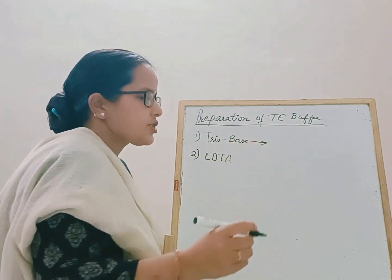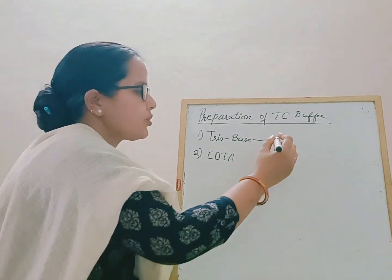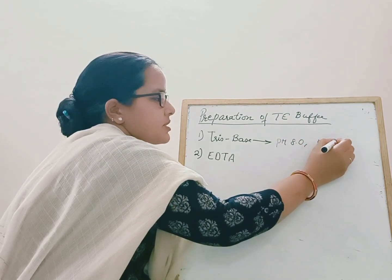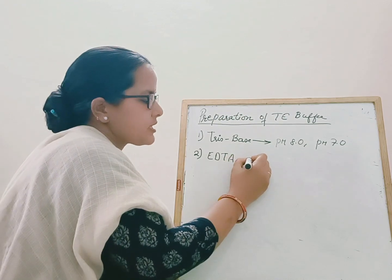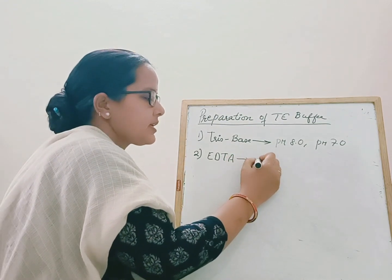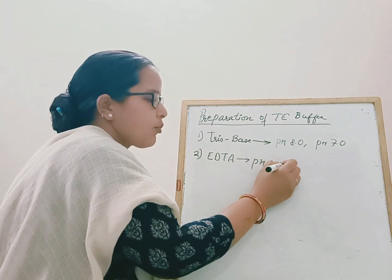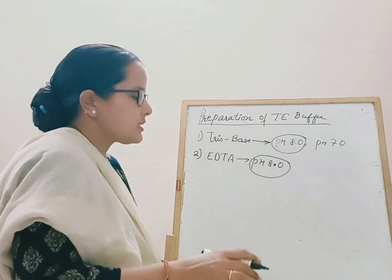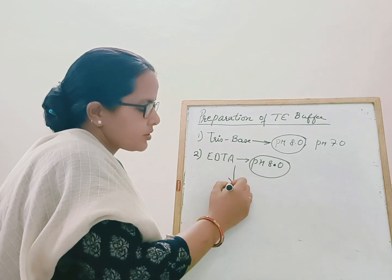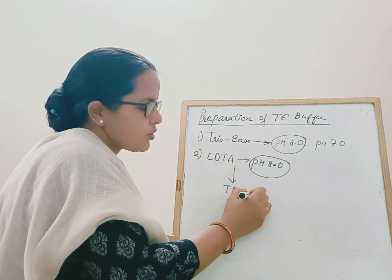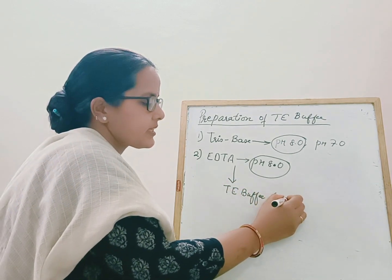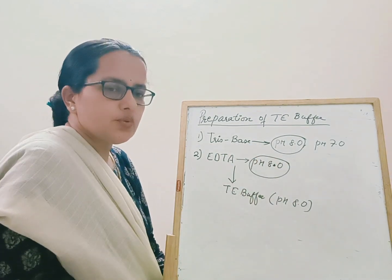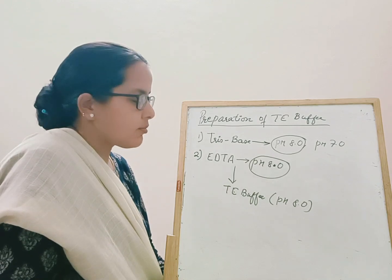For Tris base, you have to adjust its pH to either pH 8 or pH 7. For EDTA, you need to set the pH to 8. In a molecular laboratory, Tris base at pH 8 and EDTA at pH 8 are combined to reconstitute the TE buffer. This TE buffer of pH 8 is utilized in the molecular laboratory for DNA extraction, plasmid work, and many other applications.